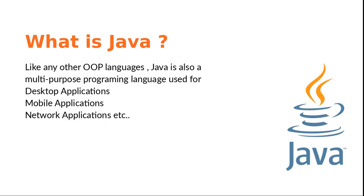What is Java? Java is an object-oriented language that's multi-purpose. It can be used for desktop applications, mobile applications, and network applications. It's everywhere — you can find it in every aspect of computer science engineering.